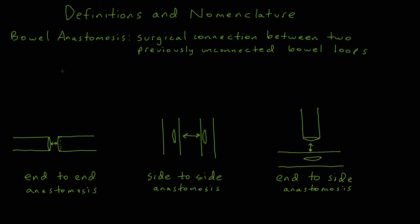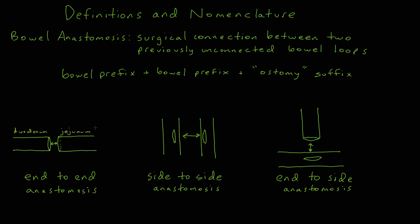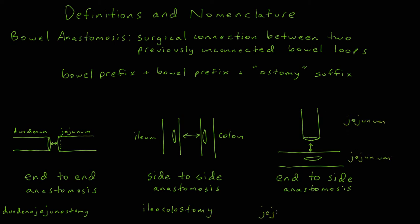Anastomoses are also described in terms of the names of the two loops of bowel that are connected. In this system, two prefixes for each anatomic segment of intestine are paired with the suffix -ostomy, which means opening. Thus, a loop of duodenum attached to a loop of jejunum would be called a duodenojejunostomy. Ileum attached to colon would make an ileocolostomy. Jejunum attached to jejunum would create a jejunojejunostomy.